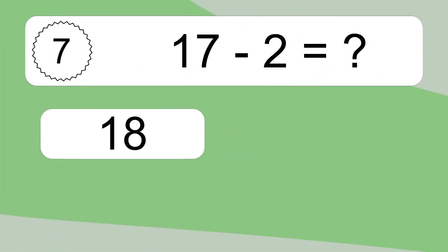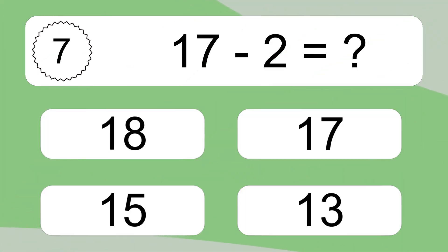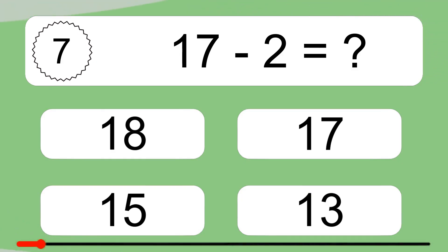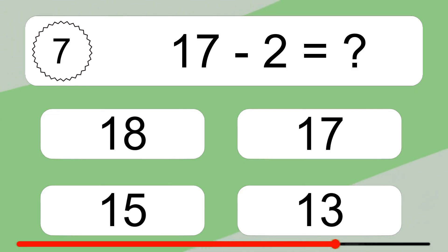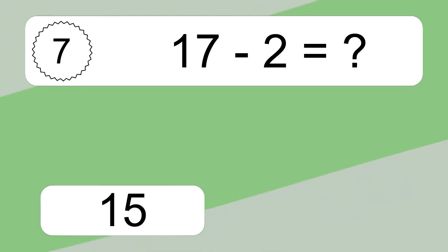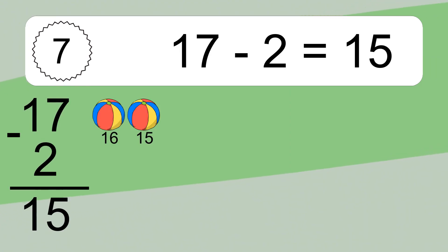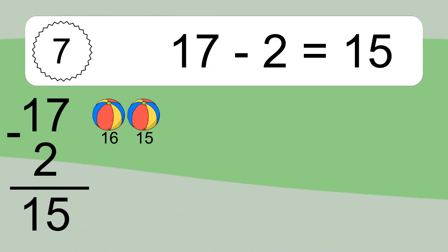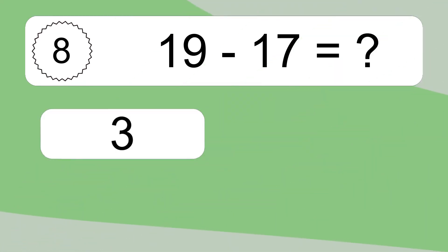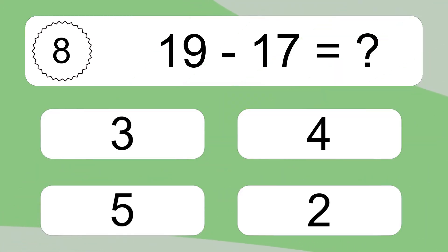17 minus 2 equals what? 17 minus 2 equals 15. Let's count it: 16, 15.